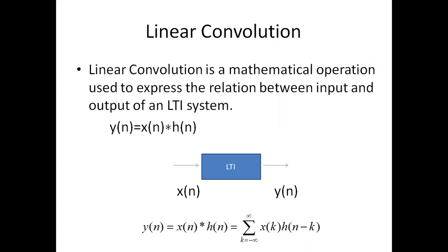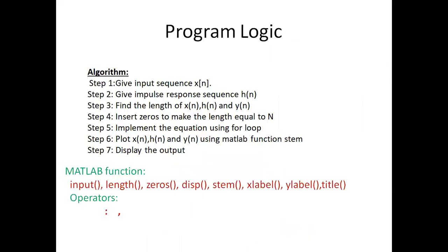To compute linear convolution using MATLAB, we need to follow this procedure: first, get the inputs X(n) and H(n) from the user. Then calculate the lengths of X(n), H(n), and Y(n), where the length of Y(n) equals LX plus LH minus 1. Next, pad zeros to make the length equal to capital N, implement the equation using a for loop, and plot the signals X(n), H(n), and Y(n) using the MATLAB stem function.